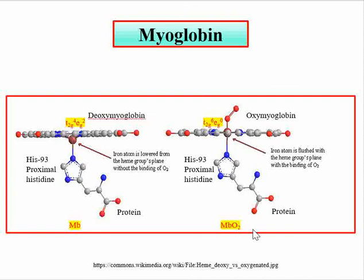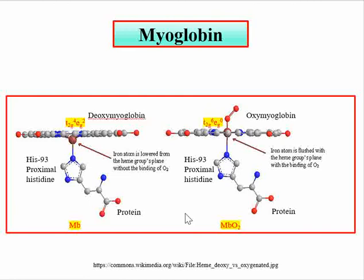Oxymyoglobin is generally written as MbO2 and deoxymyoglobin as Mb, while hemoglobin is written as Hb and oxyhemoglobin as (HbO2)4, because hemoglobin can take up 4 oxygen molecules while myoglobin can take up only 1 molecule of oxygen.